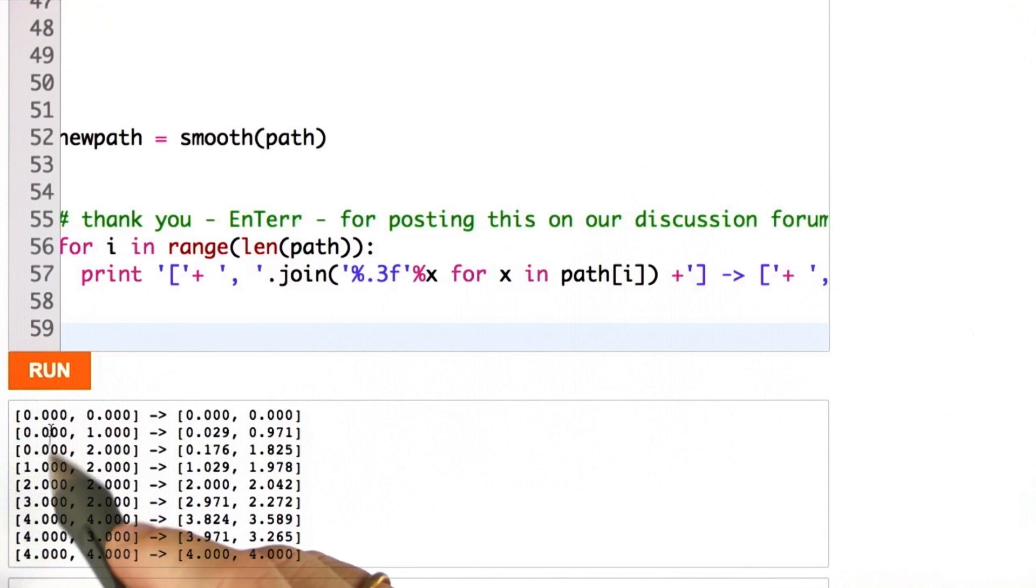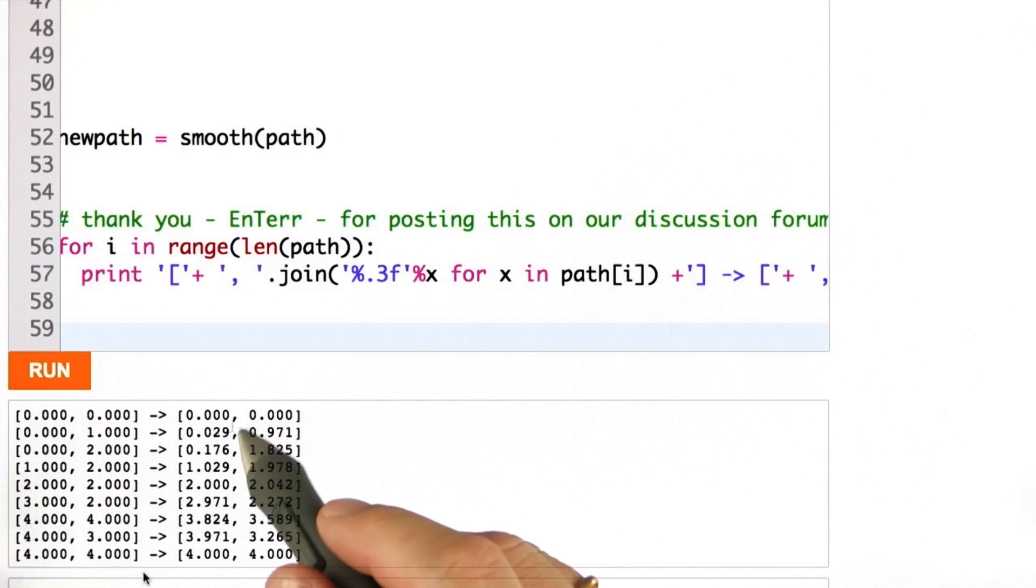And here's the result. After hitting run, I have the original path over here, 0 all the way to 4,4. The two initial and the end positions should be the same as before, so please don't modify them. But in between,